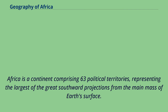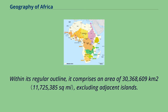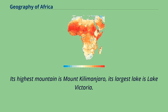Africa is a continent comprising 63 political territories, representing the largest of the great southward projections from the main mass of Earth's surface. Within its regular outline, it comprises an area of 30,368,609 square kilometers, excluding adjacent islands. Its highest mountain is Mount Kilimanjaro, its largest lake is Lake Victoria.